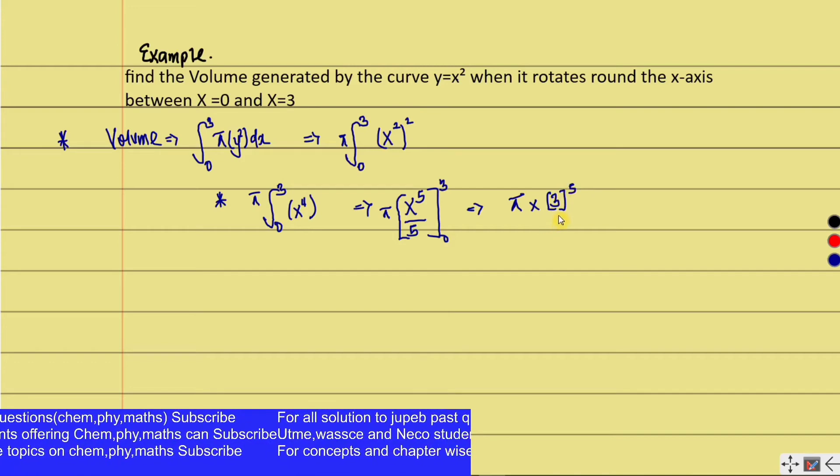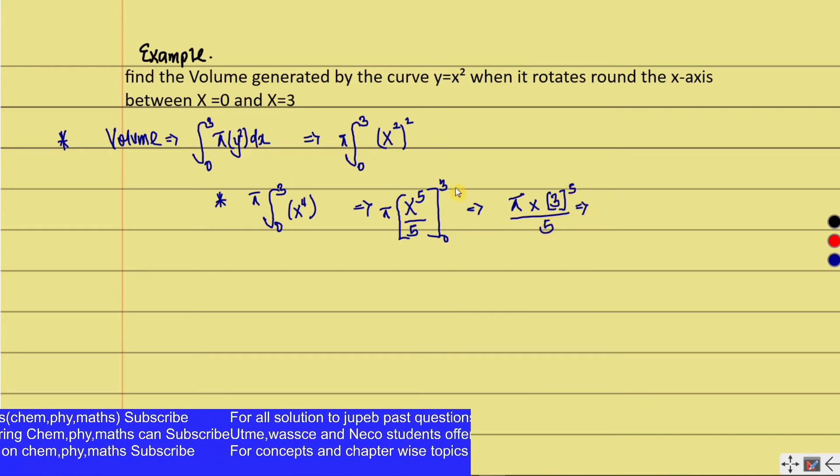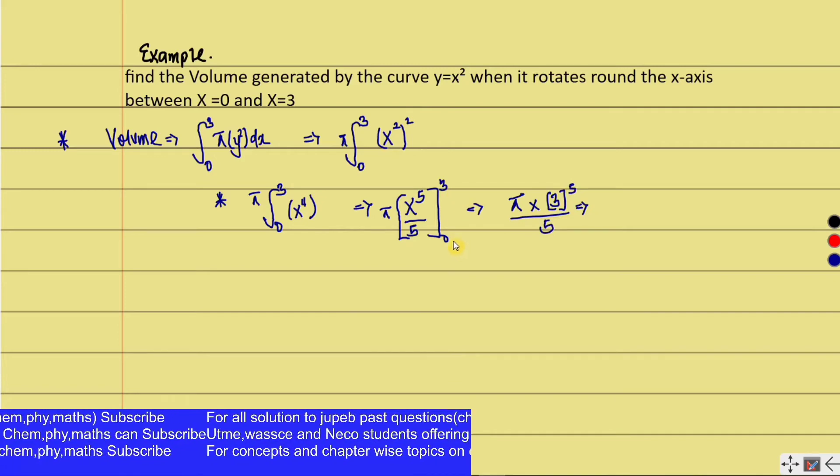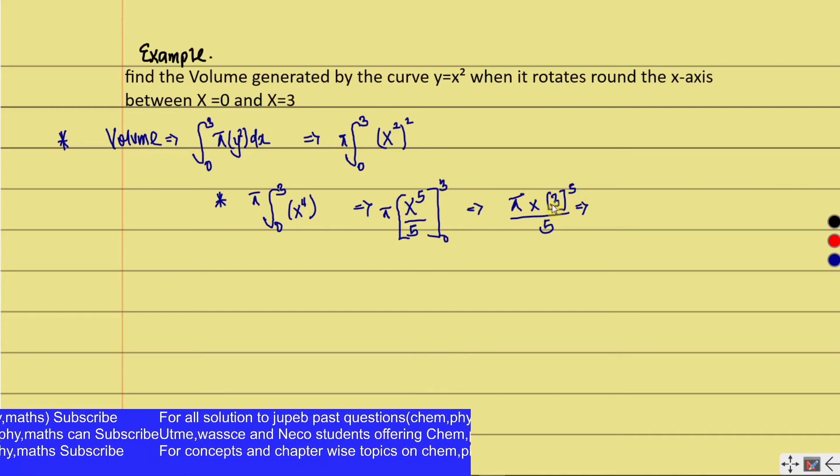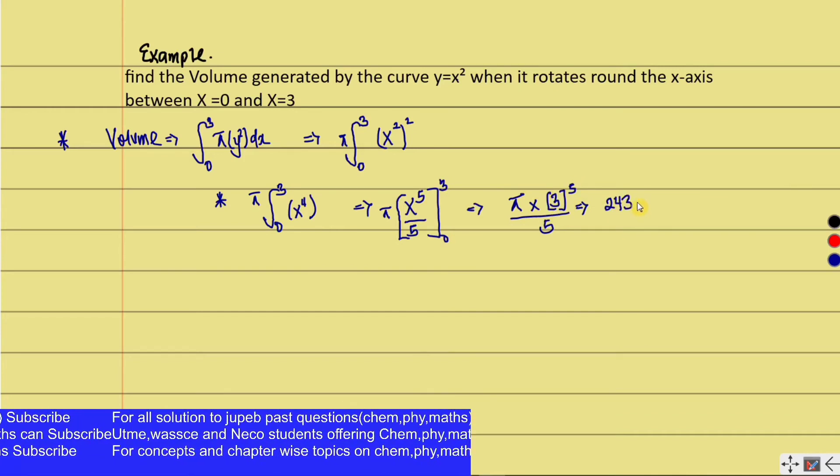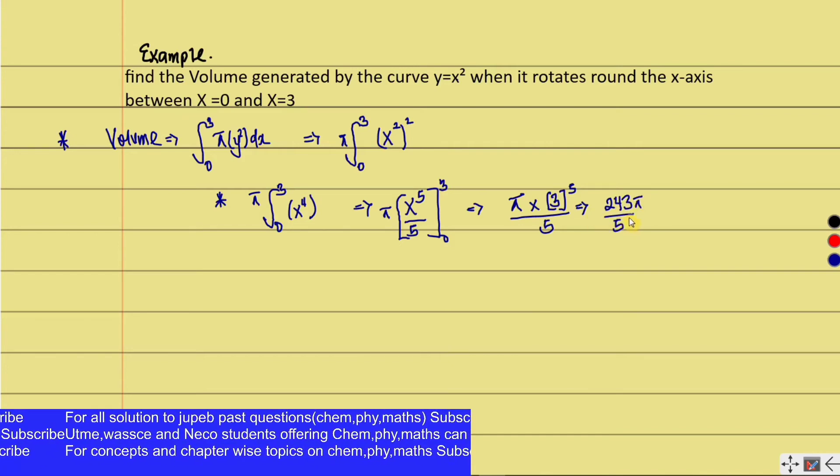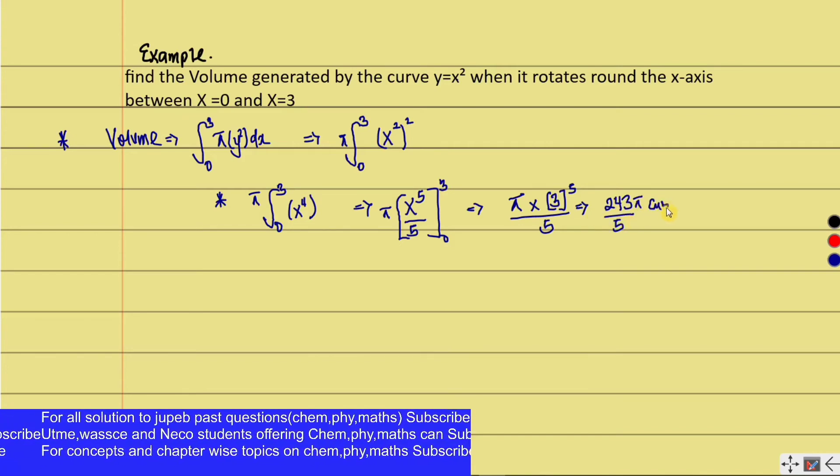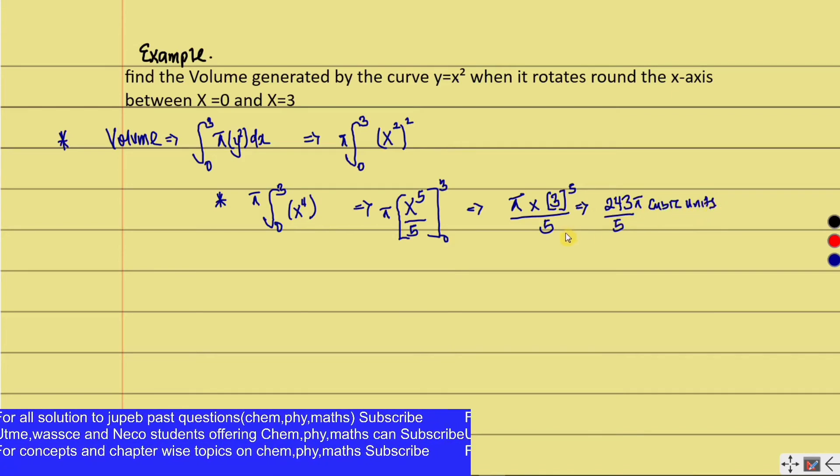Our final answer: upper minus lower limits. 3 to the power of 5 is 243, so we have π times 243 divided by 5. The answer will be in cubic units. Always keep that in mind.